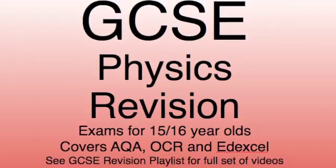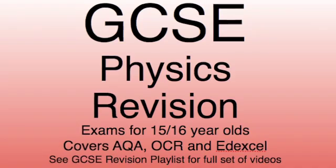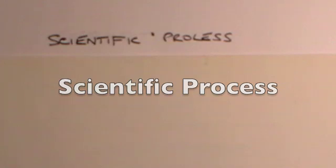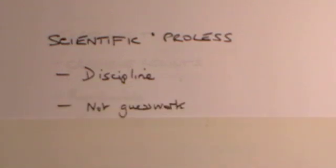Hello, today we're continuing with our GCSE physics revision series looking at the scientific process. Scientific process is very important in all branches of science, including physics. The important thing is that it is a discipline. There is a procedure through which you have to go if you are going to produce credible scientific theories. Critically, this is not guesswork. You cannot just make any old statement on the basis that it seems plausible. It's no use saying the moon is made of green cheese because that is not a scientific statement.